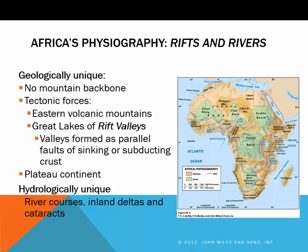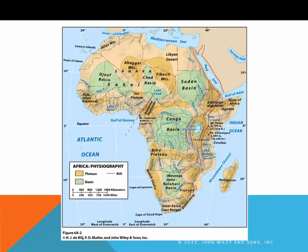Africa is the only continent that does not have a mountain backbone. It is one of two continents that include a cluster of great lakes lying in deep trenches called rift valleys. Rift valleys are formed when parallel cracks or faults appear in the Earth's crust, and the area between the crust sinks to form linear valleys. We also refer to Africa as the plateau continent, since almost the entire continent lies above 1,000 feet in elevation. Here's a larger map of the physiography with plateaus and basins, where we can see these rifts and the basins and plateaus that formed around and between them.